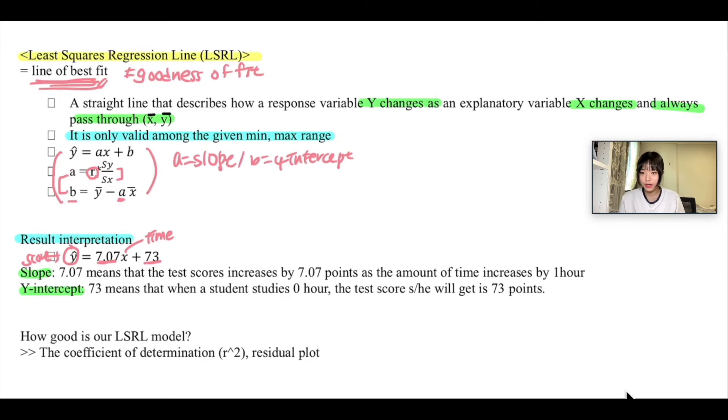For the y-intercept, you're going to say 73 means that when a student studies zero hours, or when you put x equals zero, you're going to have 73. So it's the test score they will get when they spend zero hours studying—they will have 73 points as their score.